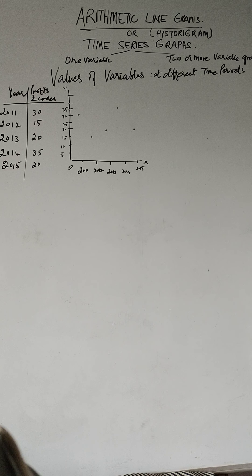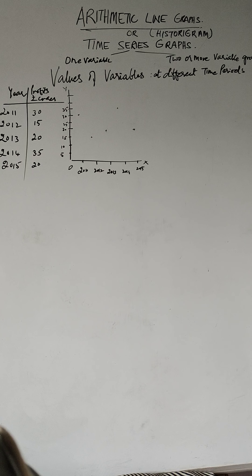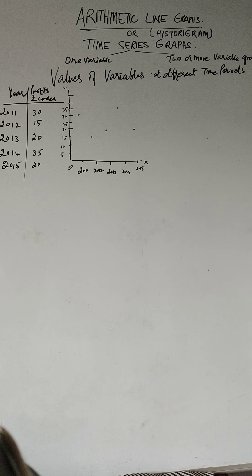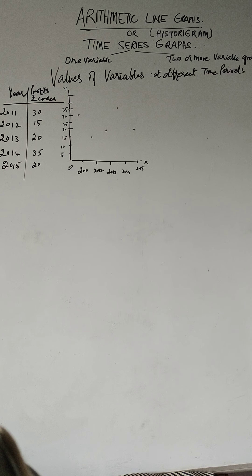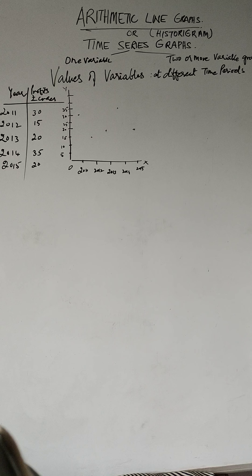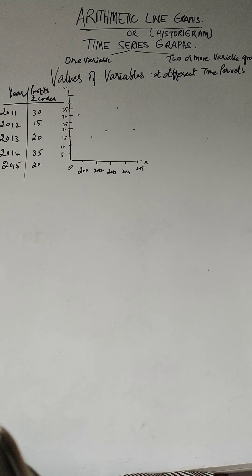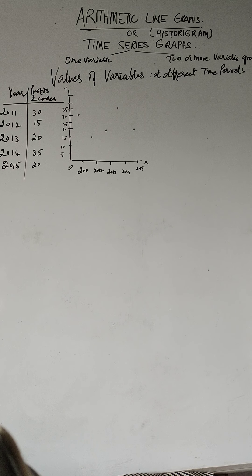They are normally referred to as time series graphs. Time series graphs could be with one variable or two or more variables. In time series graphs, the values of variables are given at different time periods.